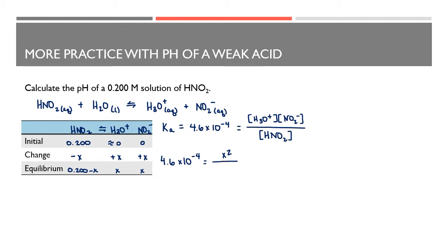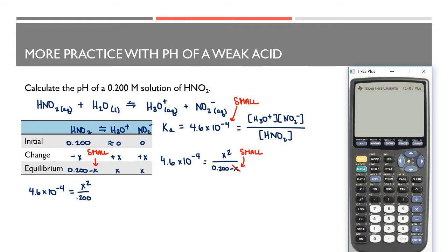My equilibrium concentrations are 0.200 − x for HNO₂ and x and x for the products. I'll write my equilibrium constant expression using these variables and the Ka from the table. Because the Ka is very small — 4.6 × 10⁻⁴ — this acid won't dissociate very much, so subtracting x from 0.2 is insignificant, and we can drop that x. Setting that up, I take 4.6 × 10⁻⁴ and cross-multiply by 0.2, giving 9.2 × 10⁻⁵.